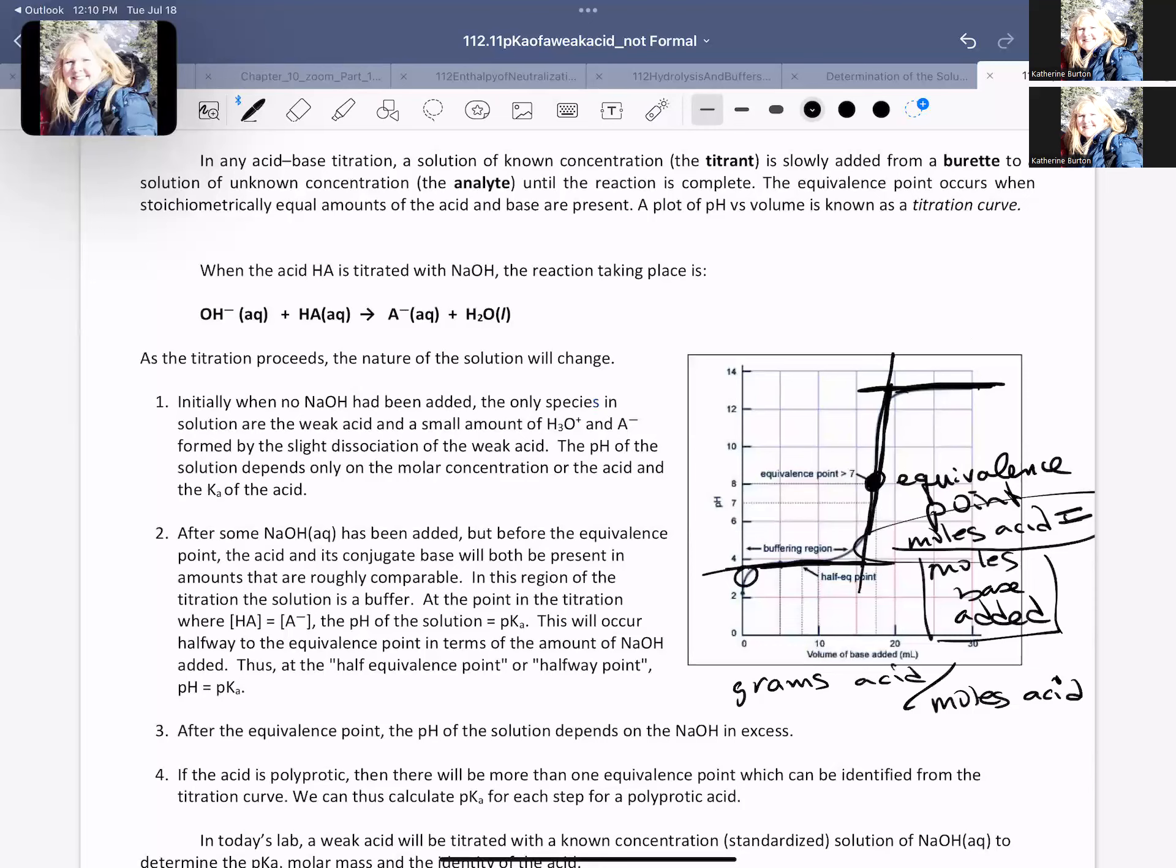With this, and obviously if you read down from your equivalence point, you're going to get the volume of base added. Remember that the volume in liters of your base added multiplied by the molarity of your base, which you recorded, is going to be the moles of the base. So we've got our moles of our base, we've got our grams of our base, and we've got our molar mass of our base.